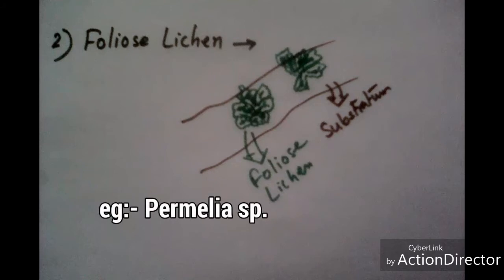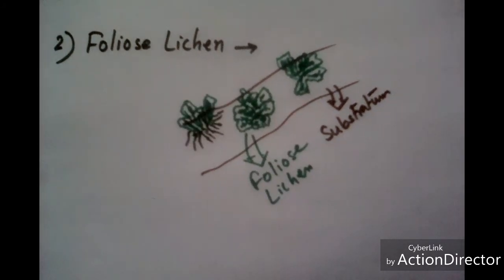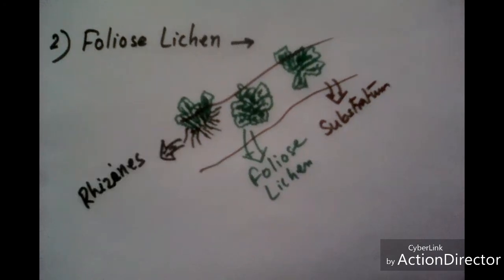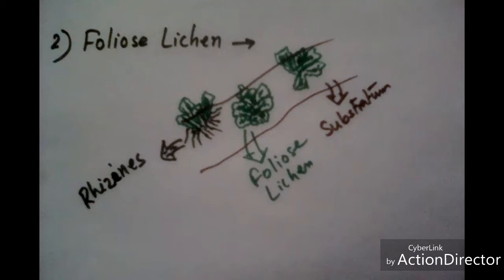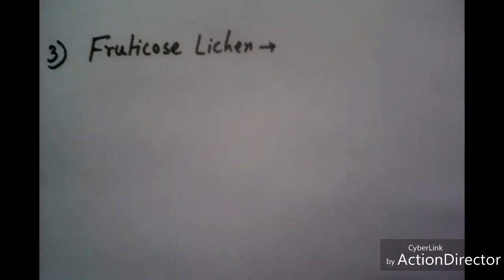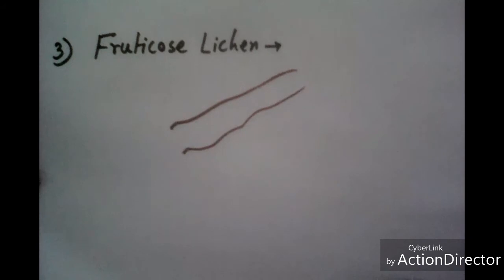Now another type of thallus is fruticose. When lichen thallus is cylindrical, ribbon-like, and branched, then this type of lichen is called fruticose.